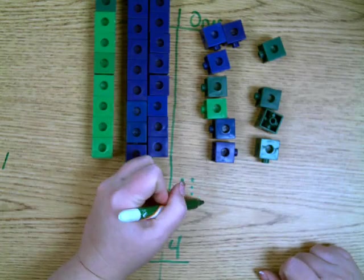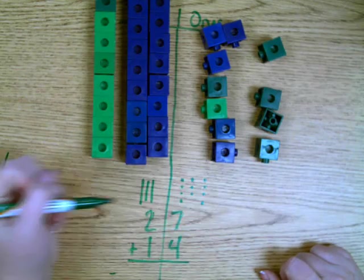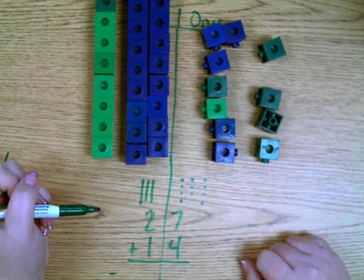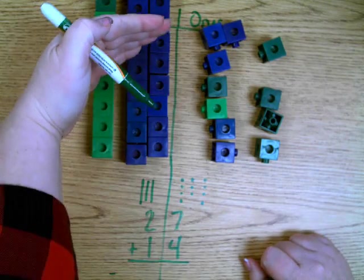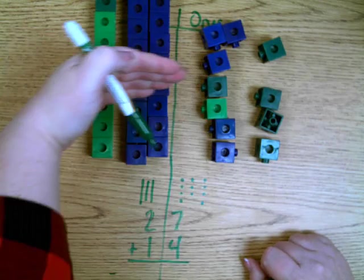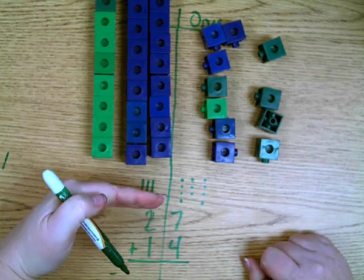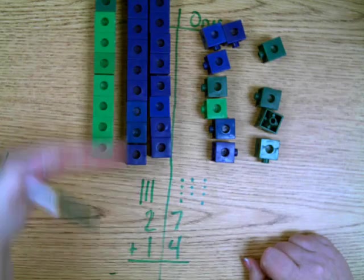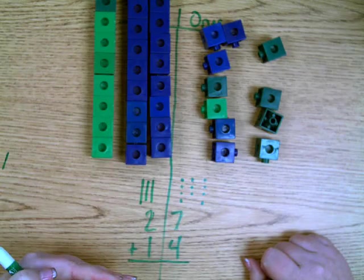And I have four ones here: one, two, three, four. Four ones from the fourteen. So now students can see the conceptual plus the representational plus the abstract thinking all in one process together.